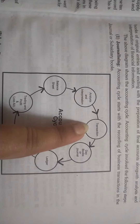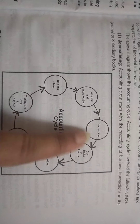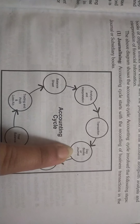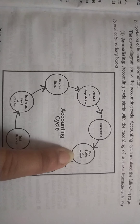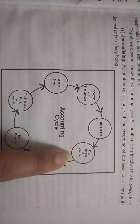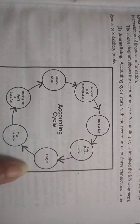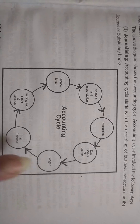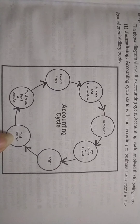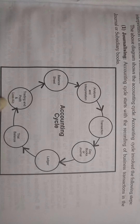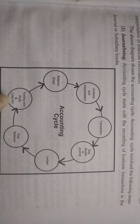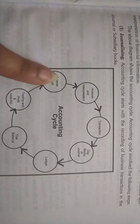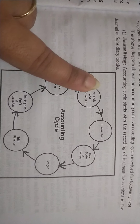We start with the transactions, then we go to the day book and the general book. From there we start the ledger, then trial balance, then trading and profit and loss account, then the balance sheet, and then we analyze it.